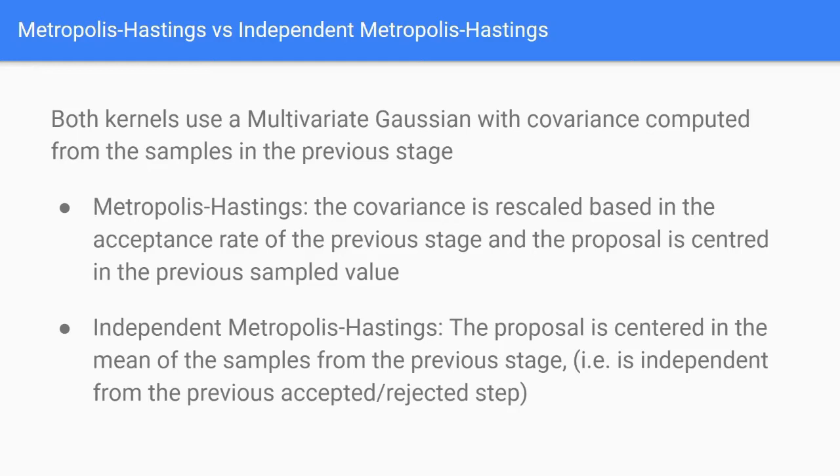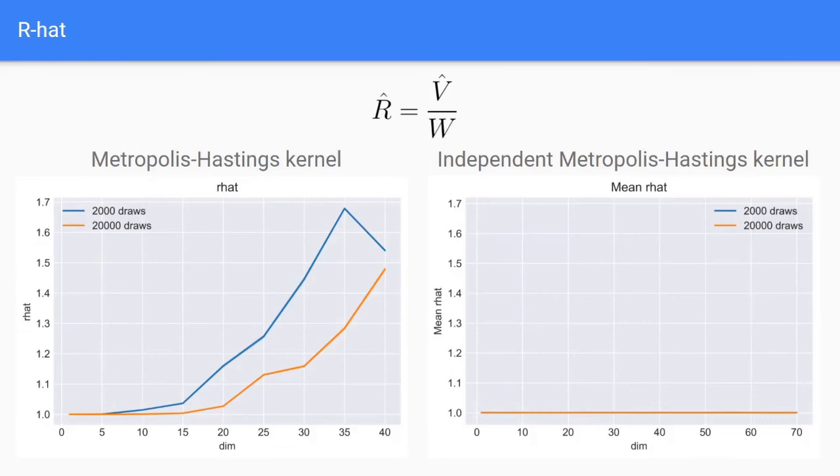This makes it independent from the previously accepted or rejected step. This means that the proposal distribution of Metropolis-Hastings is affected by the local space that's being sampled, while for independent Metropolis-Hastings the proposal distribution is more global.